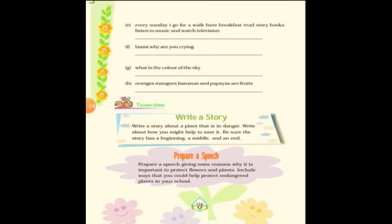Moving to the next activity: write a story about a plant that is in danger and how you might help to save it. Make sure the story has a beginning, middle, and end. For example, you could write: 'There was a plant that was very sad. He heard that some people wanted to cut him down for his wood, and he was scared.' You can create your own story about the plant. These are the main topics we covered today — hope you are through with the rhyme 'A Watering Rhyme' and its exercises. If you have any doubts, you can post them in the group. Thank you, children.